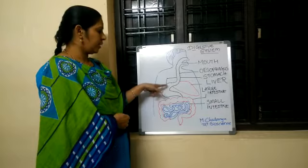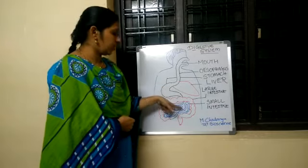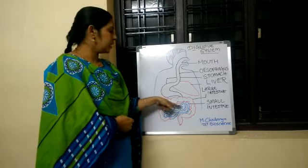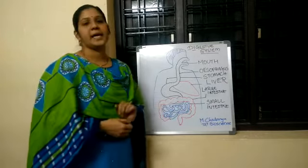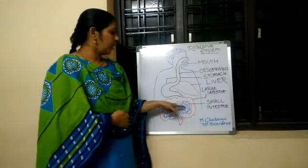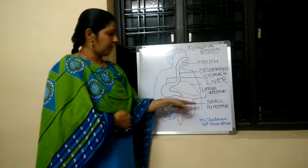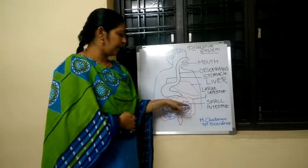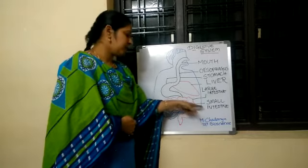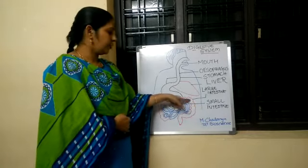Then the food is transferred to the small intestine. In the small intestine, all the water and extra nutrients are absorbed by the blood, and the undigested food is transferred into the large intestine.